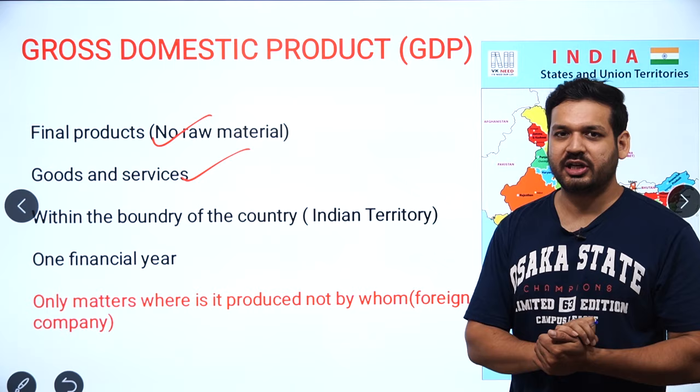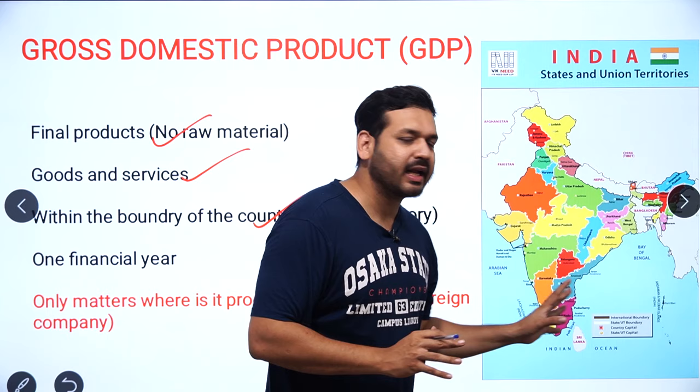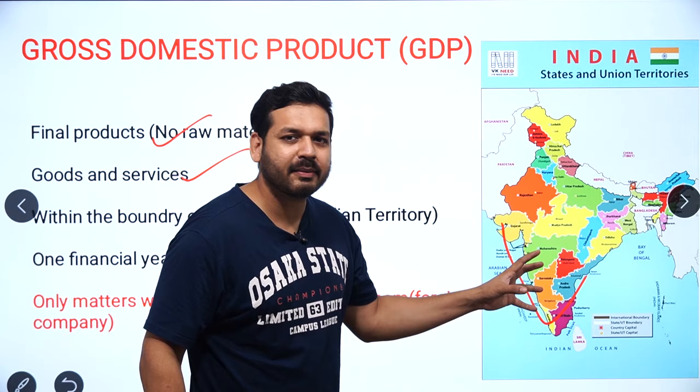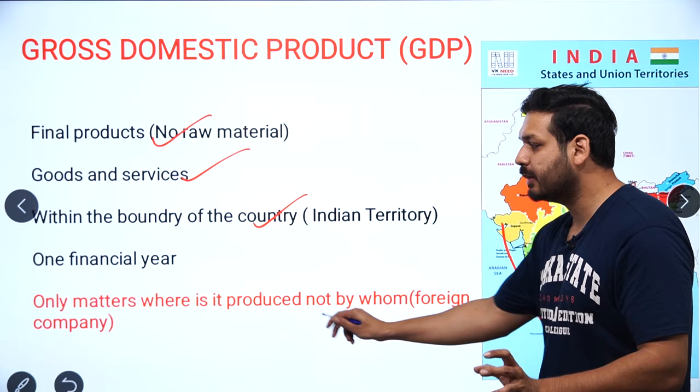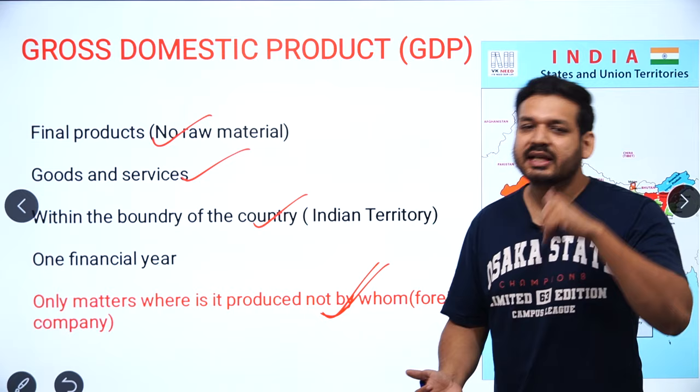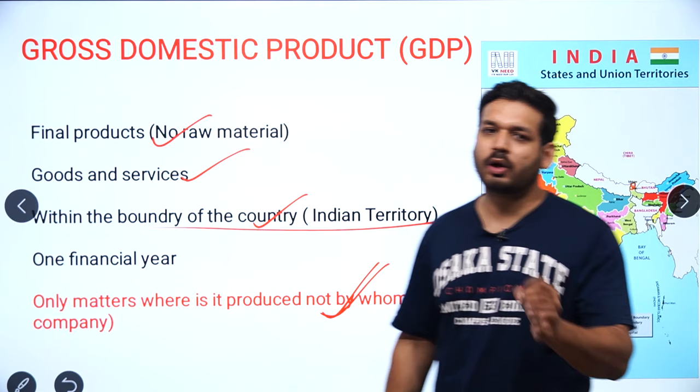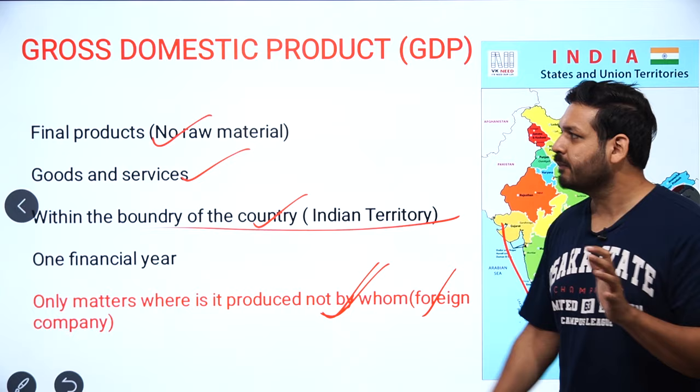GDP is calculated within a geographic area. For example, this is India — within India's boundary, whichever goods and services are produced, that is the GDP. It doesn't matter who produces it — whether Indians or foreigners — as long as it is produced within the boundary of India, it will be counted in GDP.